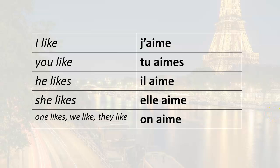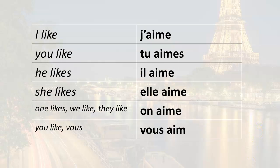So we have our singular forms: j'aime, tu aimes, il aime, elle aime, on aime. There's one more singular form and that's vous. Remember, vous can be singular or plural — it's formal, the formal you. The tu is the informal you speaking to one person, and vous is the formal you. The ending for vous is -ez, so vous aimez.